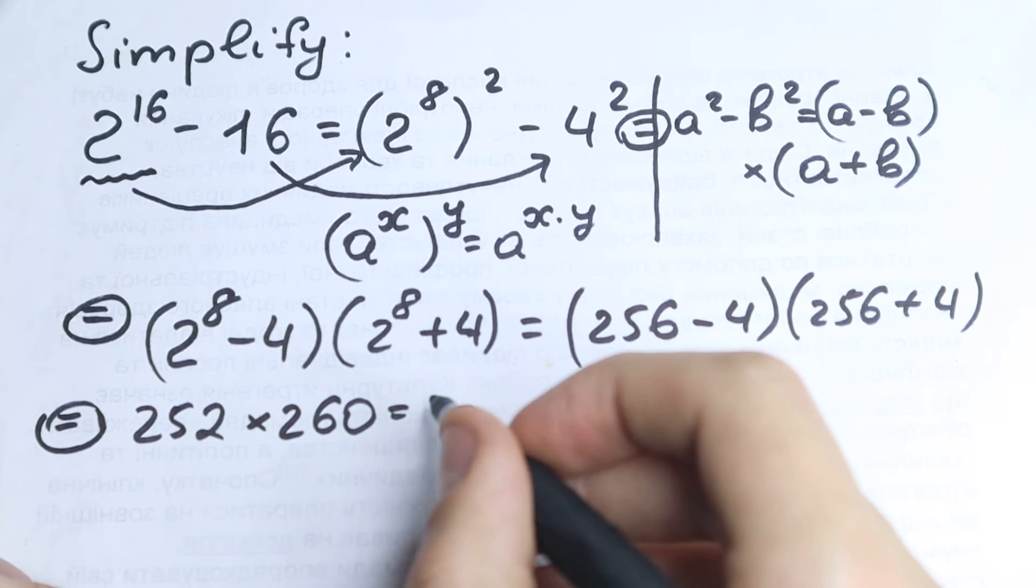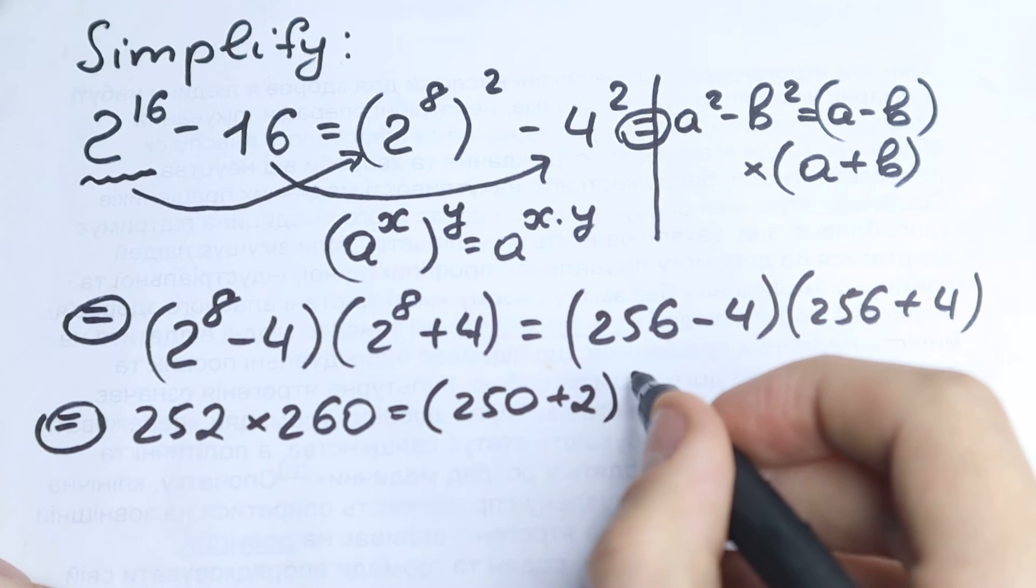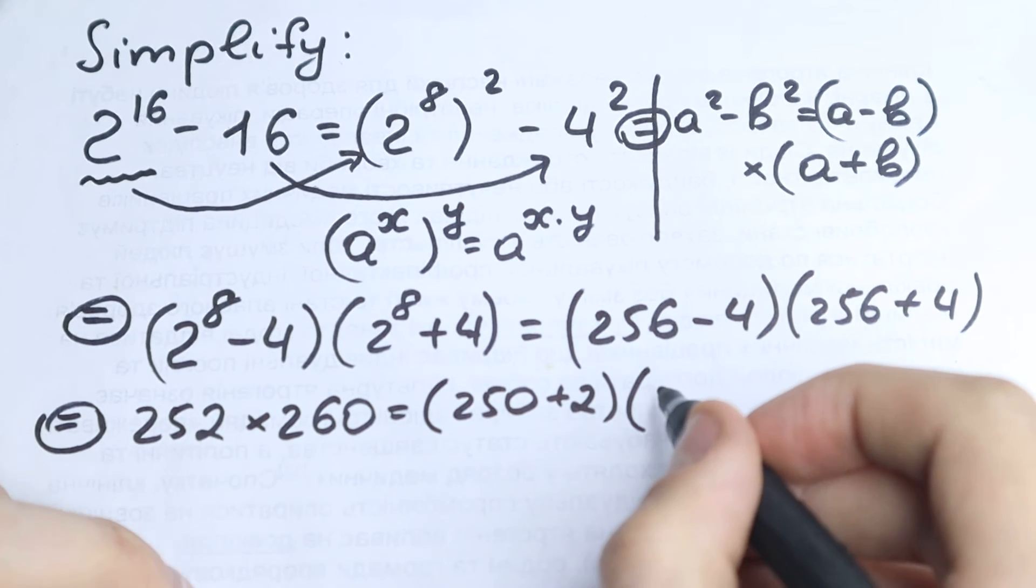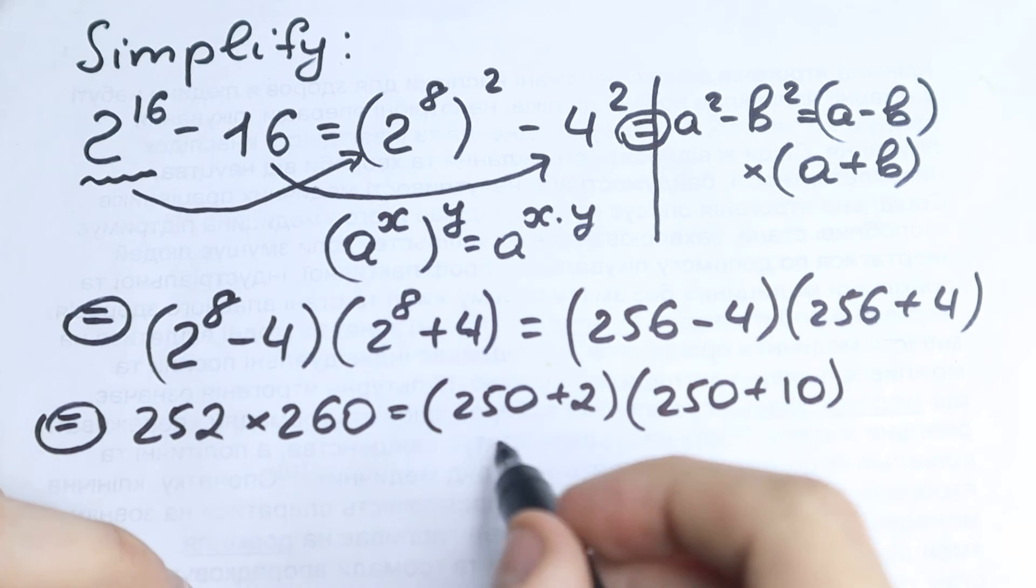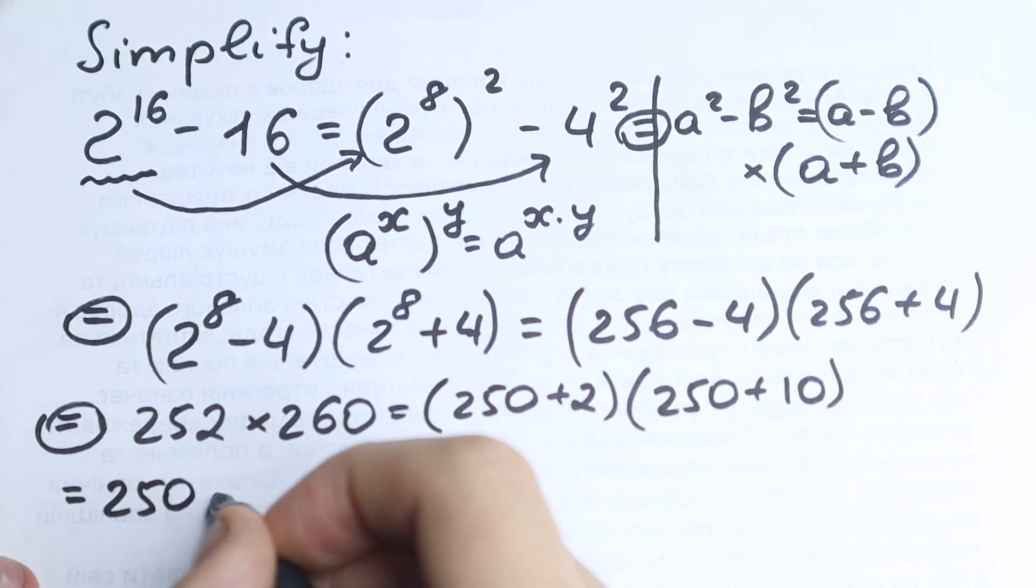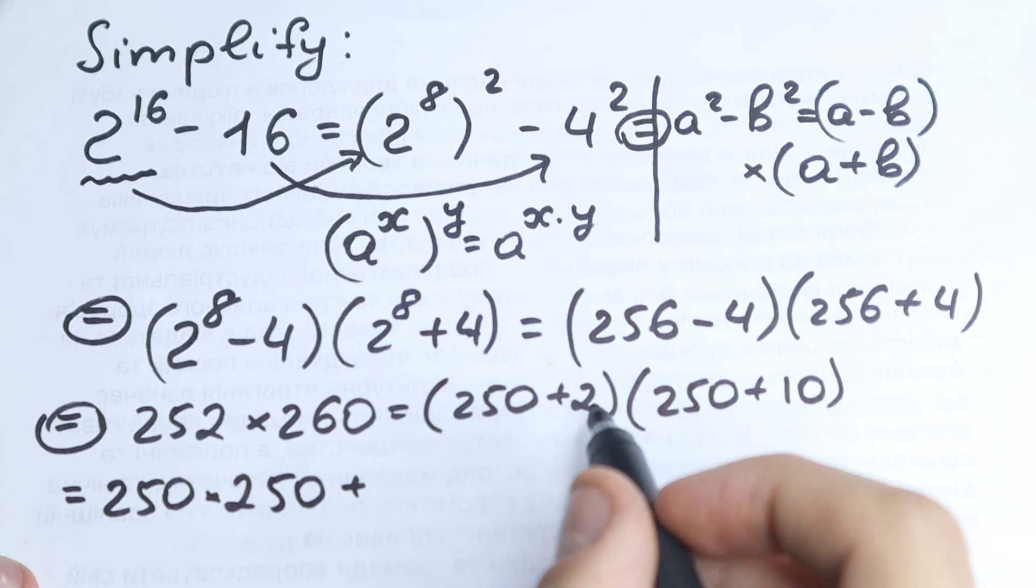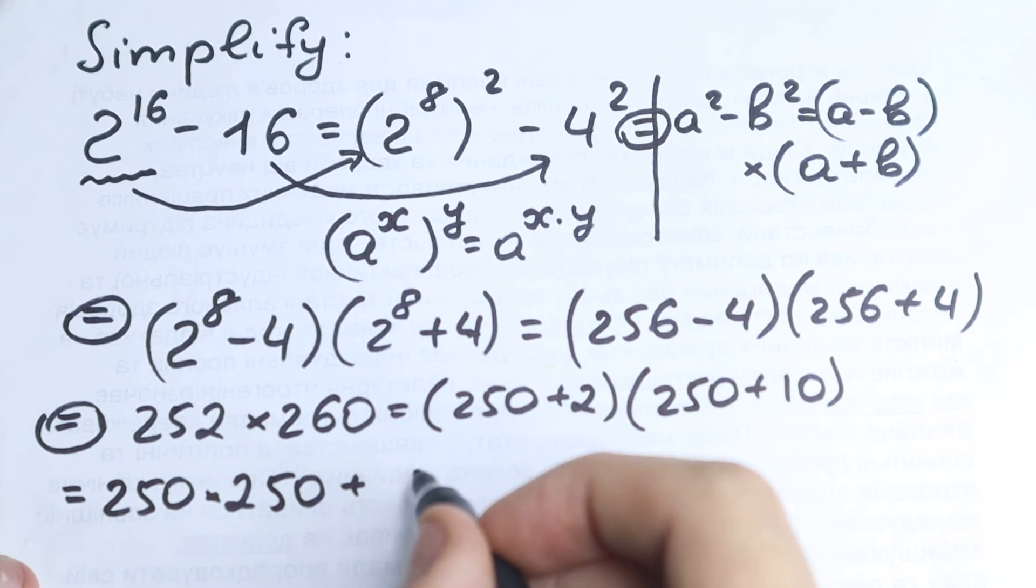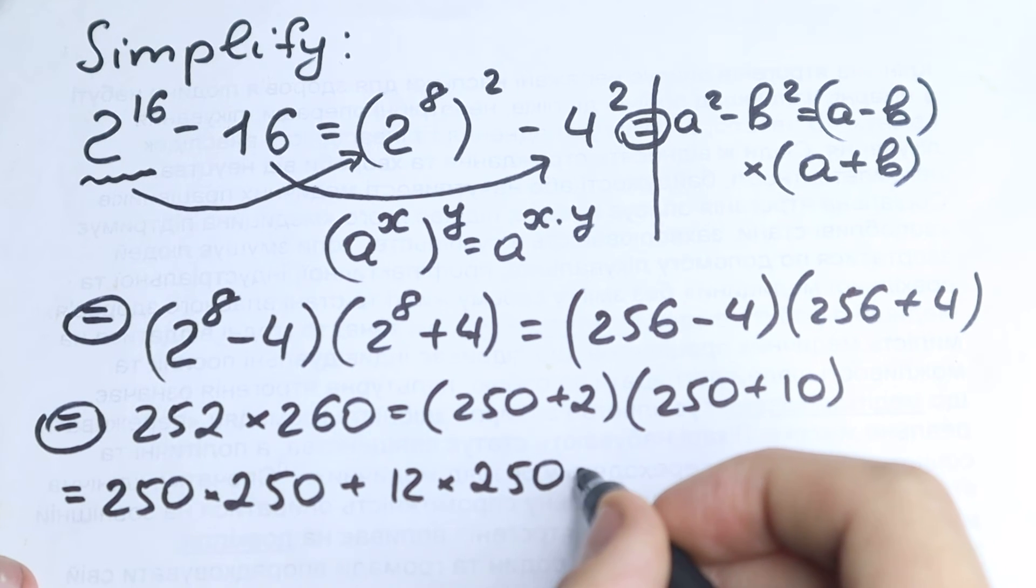So 252, let's write as 250 plus 2, and 260, let's write as 250 plus 10. In this way, and right now multiplying parentheses by parentheses. So we have 250 times 250, then we have plus 2 plus 10, we have 12 times 250, and plus 2 times 10, we have 20.